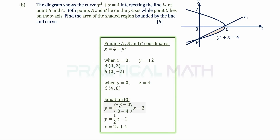To find the equation of L1 using y = mx + c: the vertical intercept c = -2. The gradient is (y1 - y2)/(x1 - x2) = 1/2. So the equation is y = ½x - 2. Making x the subject for integration with respect to y gives x = 2y + 4 for the L1 equation.